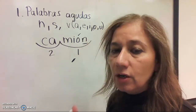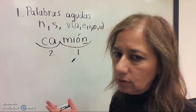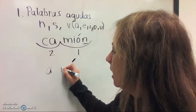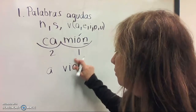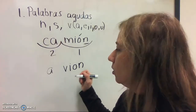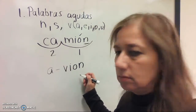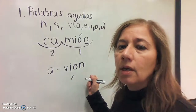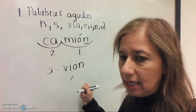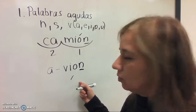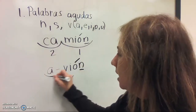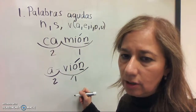The majority of words that mean something — many of them have accents. For example, another aguda is avión. Where is the stress? On the A or on the vión? Here, on the last syllable. Does it take a written accent? Does it end in N, S, or vowel? Yes — so you are going to write the accent. Accent on the O.